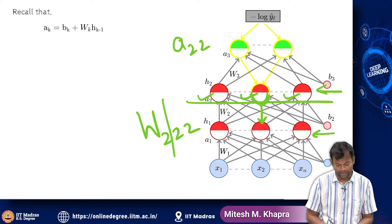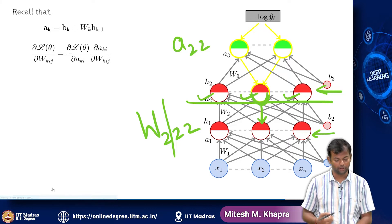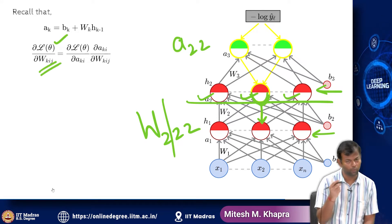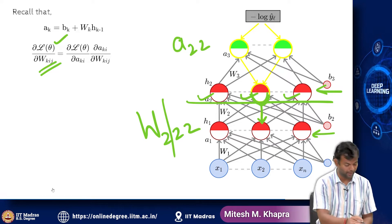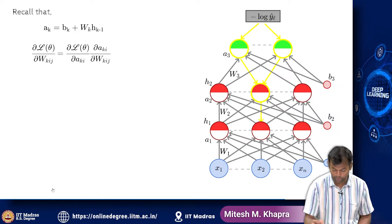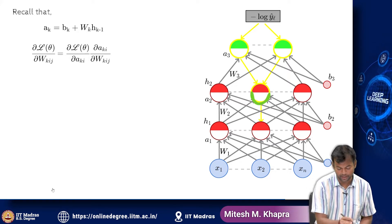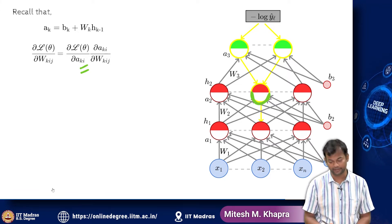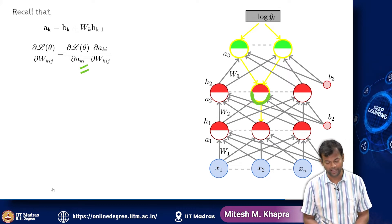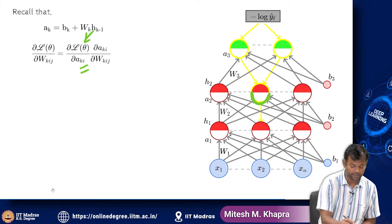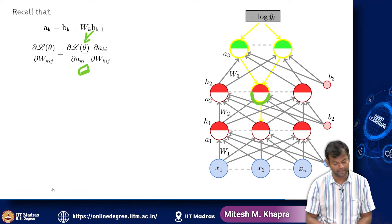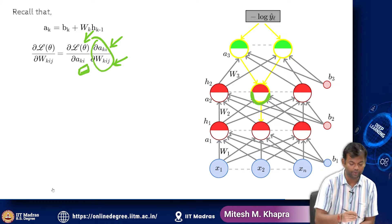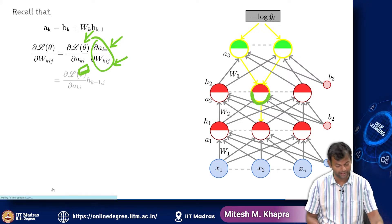I am going to exploit this fact. If I want to compute the derivative of the loss function with respect to one of the entries in the matrix, I can split it into two parts using the chain rule. I already know the derivative of the loss function with respect to A_ki — the ith neuron in the kth layer — from the previous lectures. Then I need the derivative of A_ki with respect to W_kij, and that turns out to be straightforward.